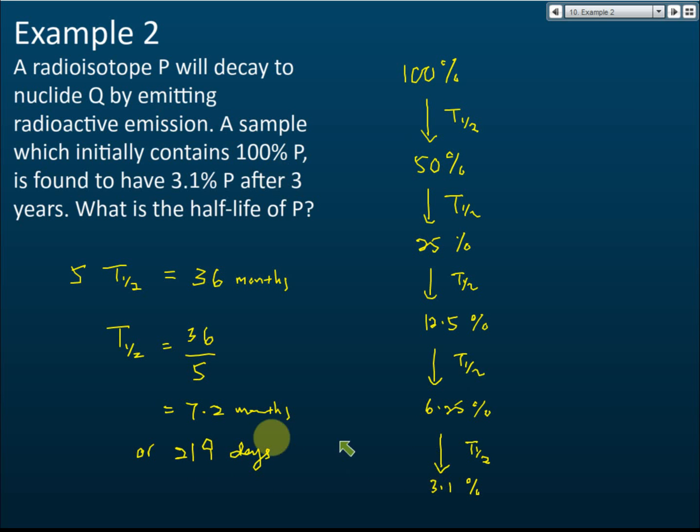So the answer is 7.2 months, or more accurately 219 days. Personally, I prefer 219 days because it's more accurate. Months—it's very hard to tell, right? Because some months have 28 days, some months have 30 days, some months have 31 days.